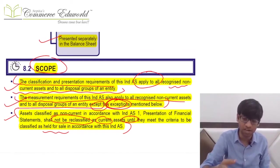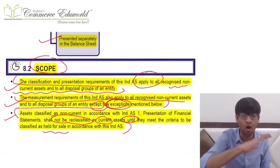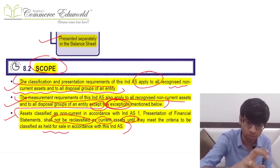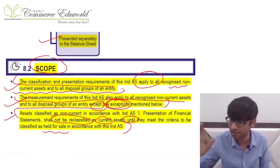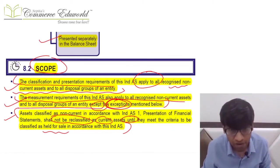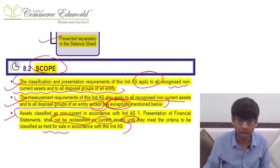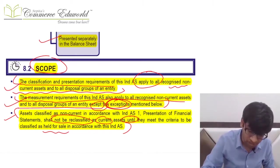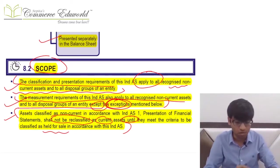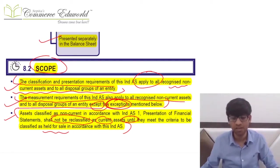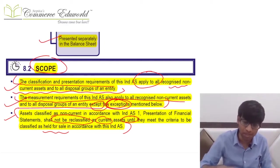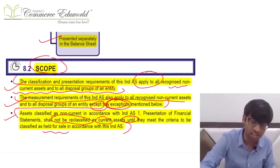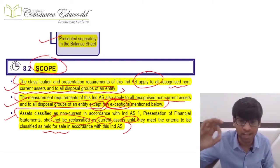The classification requirement and the presentation requirement of this standard are applicable to all non-current assets held for sale and all disposal groups held for sale. However, the measurement requirement of this standard is applicable only to non-current assets — either individually or as part of a disposal group — with certain exceptions. For certain non-current assets, even if individually held or part of a disposal group, the measurement aspect of this standard is not applicable.